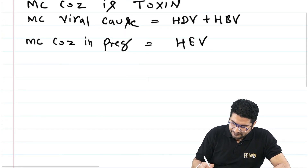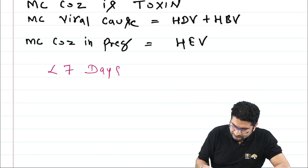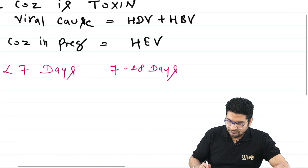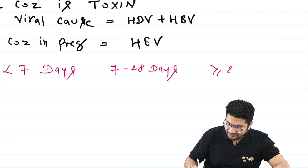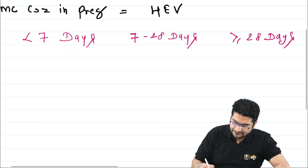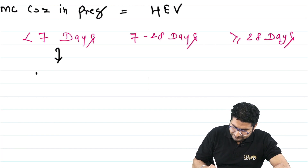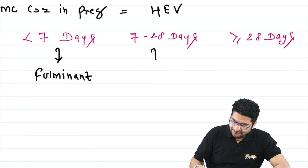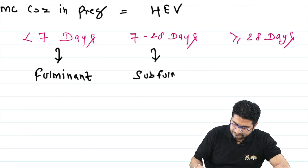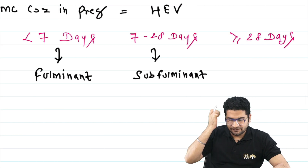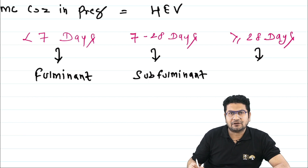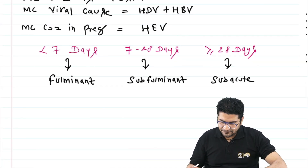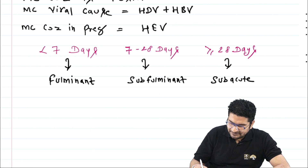Based on duration, liver failure is classified as follows: if it develops in less than seven days, it is called fulminant liver failure; if it develops in seven to twenty-eight days, it is called sub-fulminant hepatic failure; and if it develops after twenty-eight days, it is called sub-acute liver failure.